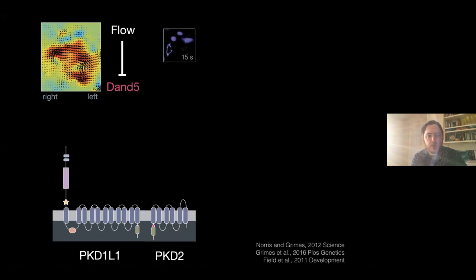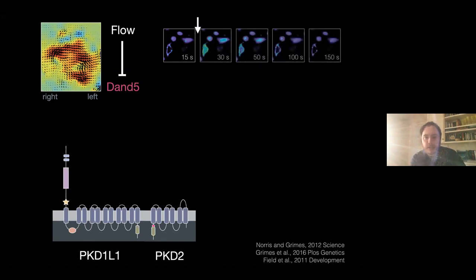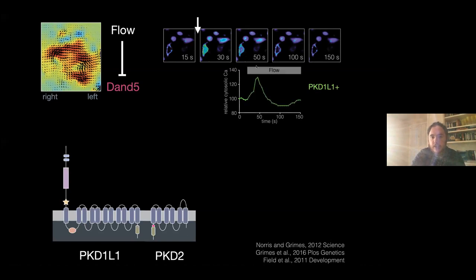We found that PKD1-like-1 physically interacts with PKD2, and they co-localize in cilia. We wanted to directly assess whether this complex can respond to fluid flow signals. We cultured flow sensory cells—vascular endothelial cells loaded with calcium indicator. When you apply fluid flow, you see a calcium transient. We demonstrated that in the presence of PKD1-like-1, we saw a nice response to artificially applied fluid flow. But in the absence of PKD1-like-1, this flow response didn't occur.